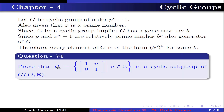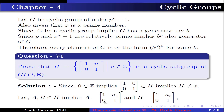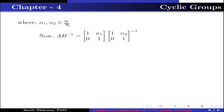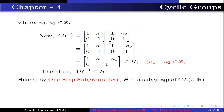Question number 74: prove that H, the set of 2×2 matrices of the form [1, n; 0, 1] where n belongs to Z, is a cyclic subgroup of GL2(R). Since 0 belongs to Z, the identity matrix [1, 0; 0, 1] belongs to H, so H is non-empty. Let A = [1, n1; 0, 1] and B = [1, n2; 0, 1] belong to H. Then AB⁻¹ equals [1, n1−n2; 0, 1], which belongs to H because n1 − n2 belongs to Z. Therefore AB⁻¹ belongs to H, and by the one-step subgroup test, H is a subgroup of GL2(R).